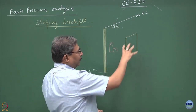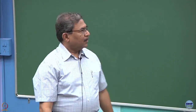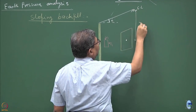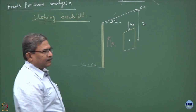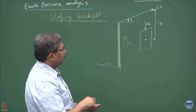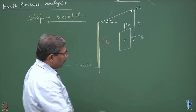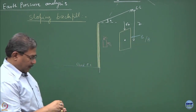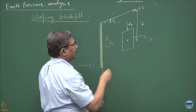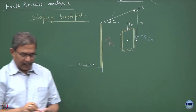One important thing is the free body diagram of this element, which I did not draw in the previous module. At depth z, we have sigma_z acting. We also have earth pressures Pa or Pp depending on the direction. Once you have tilted the ground surface by angle i, a shear stress gets introduced. This is how the element looks.